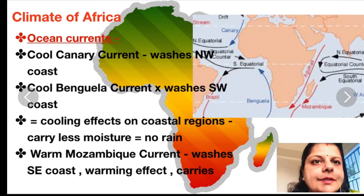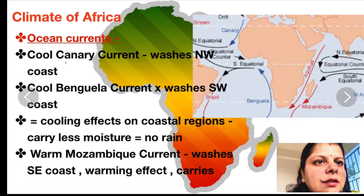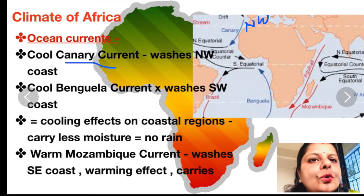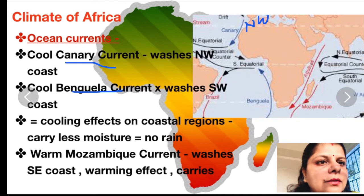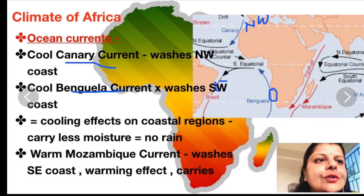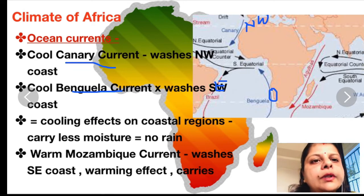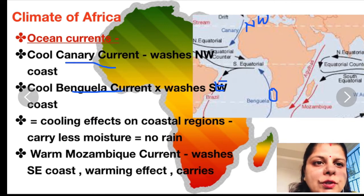The third factor is ocean currents. Africa is washed by both warm and cool currents. The cool Canary current washes the northwestern coast of Africa, making those coastal regions cooler. The cool Benguela current washes the southwestern coast, again making those coastal regions cooler. Because of these cool currents, the coastal regions experience cooler climates compared to other regions on the same latitude. However, these cool currents carry very little or no moisture, so they do not bring any rainfall to these coastal regions.